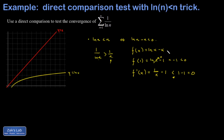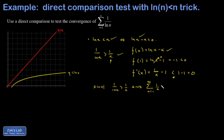So natural log x minus x is less than zero, provided x is bigger than one. That means natural log n minus n is less than zero, provided n is bigger than one. So natural log n is less than n, and in turn, one over natural log of n is greater than one over n. Our direct comparison is that since one over natural log n is greater than one over n, and because the harmonic series is divergent, the series we're investigating diverges as well.